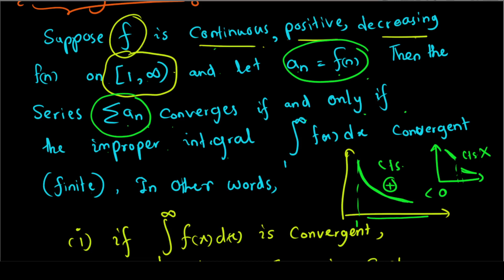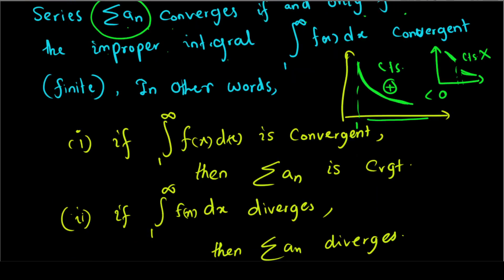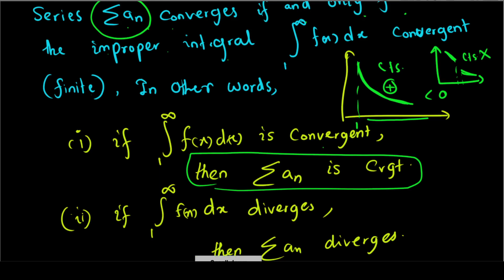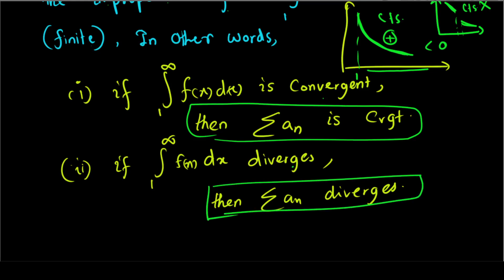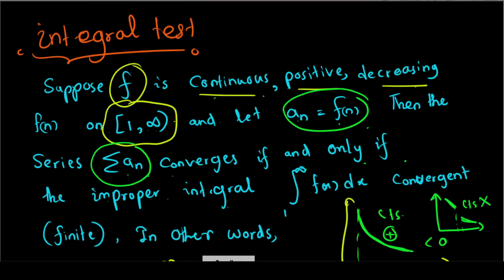That function is continuous, positive, and decreasing. In this case, we can ask whether we have convergence for the improper integral corresponding to the series. If we have divergence for the improper integral, the series also diverges. I will prove the Integral Test and then use it for the P-series.